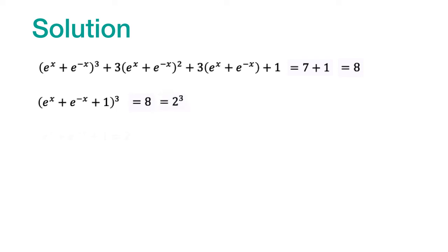Comparing the two sides, we can say that e^x + e^(-x) + 1 must be equal to 2, which means e^x + e^(-x) should be equal to 1. But we already know that's not possible because e^x + e^(-x) must be greater than or equal to 2.